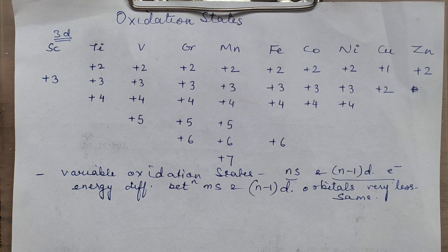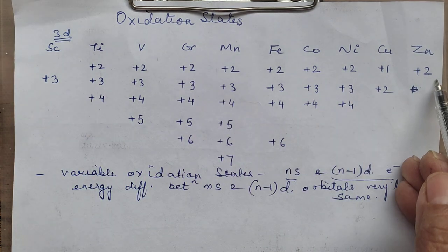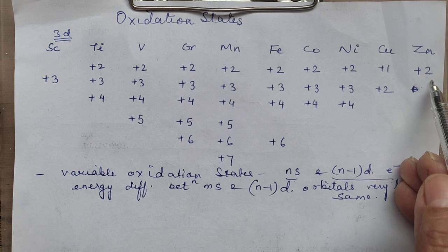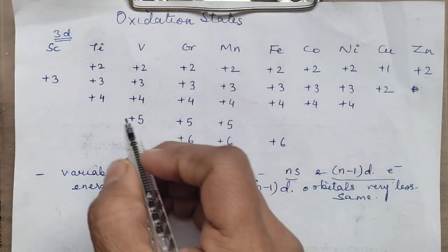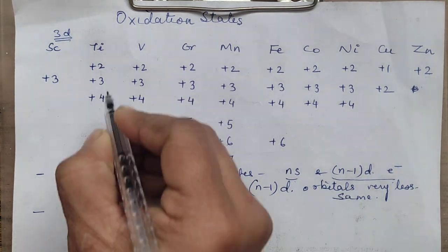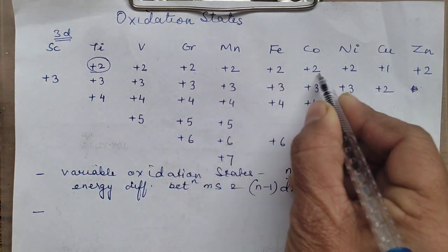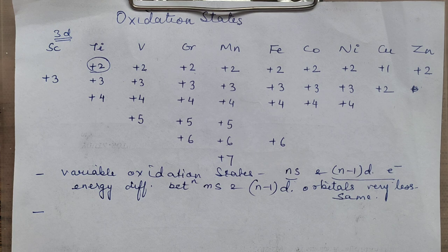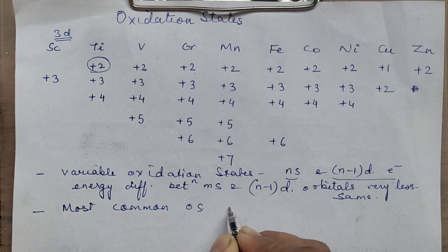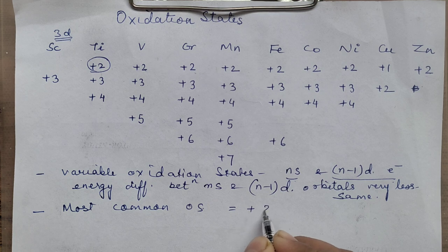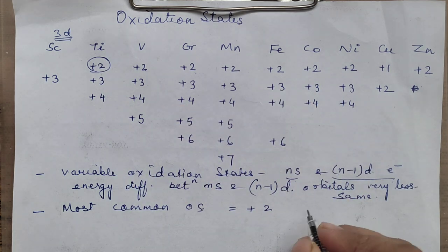Another important point: in most of the elements — majorly we talk about this particular series — but generally in all the series, the most common oxidation state exhibited by them is +2. Of course there are one or two exceptions which we will discuss, but the most common oxidation state exhibited by them is +2.